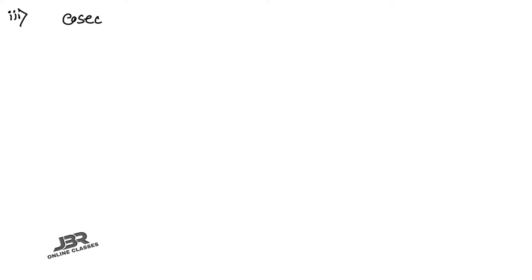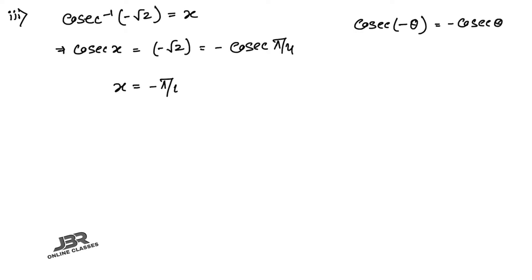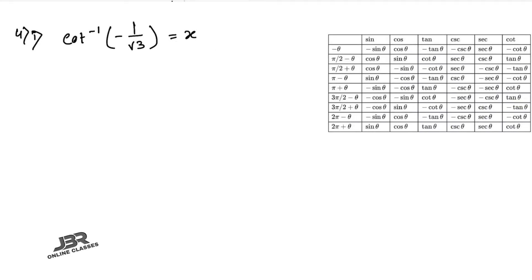Sum number 3.3: cosec⁻¹(−√2) = x, so cosec x = −√2. Using the identity cosec(−θ) = −cosec(θ), and since cosec(π/4) = √2, we get −cosec(π/4), so x = −π/4.